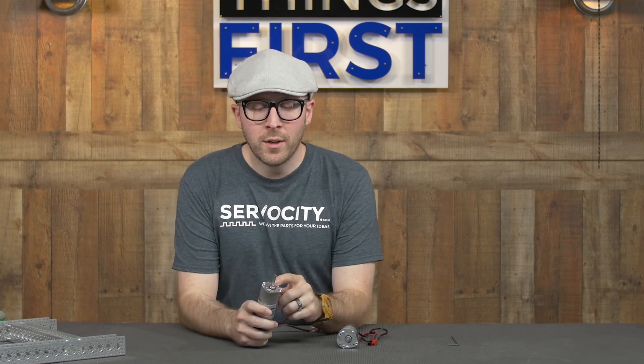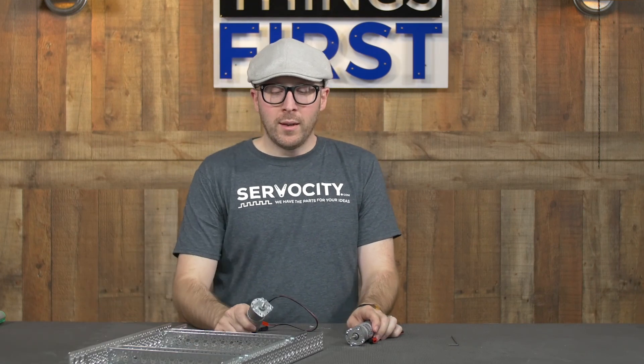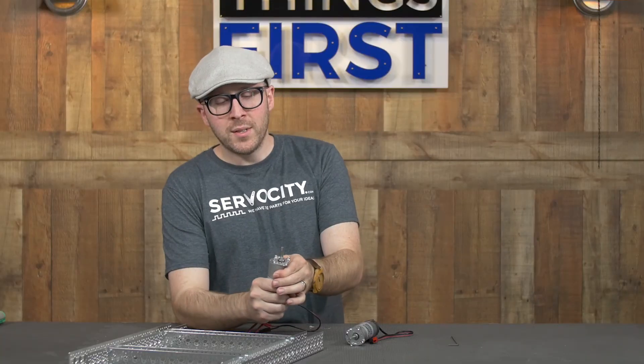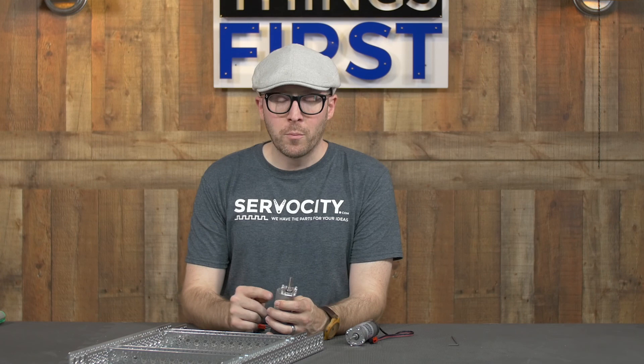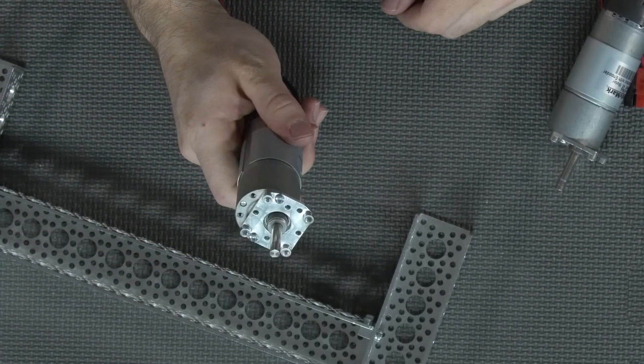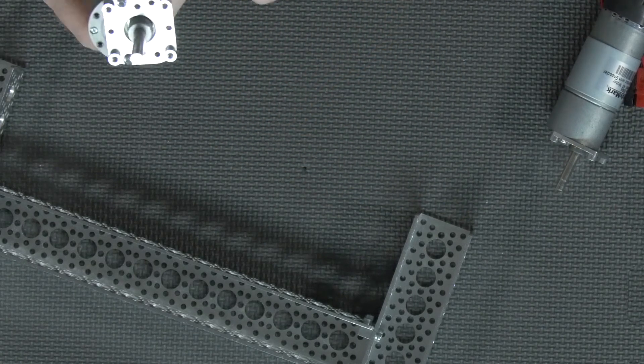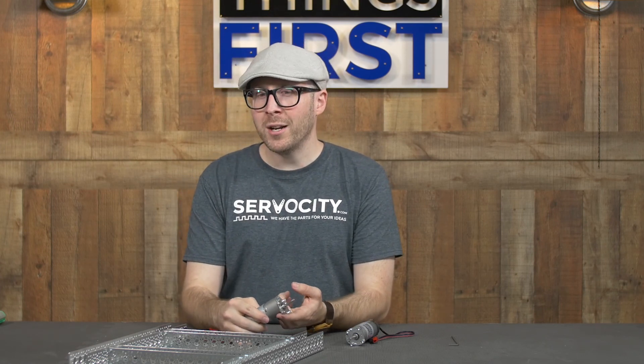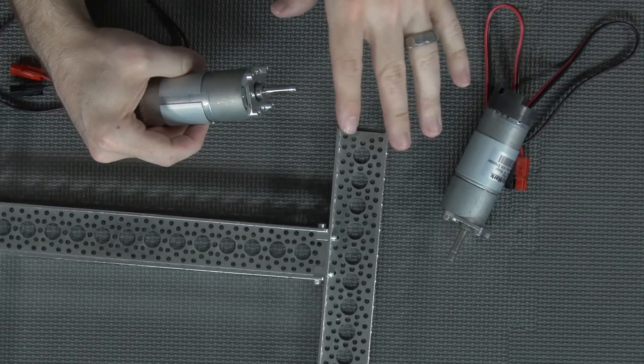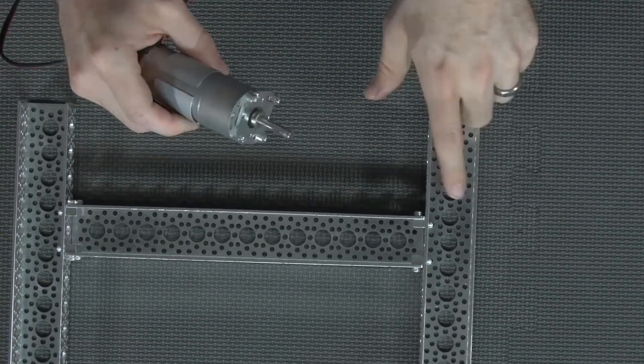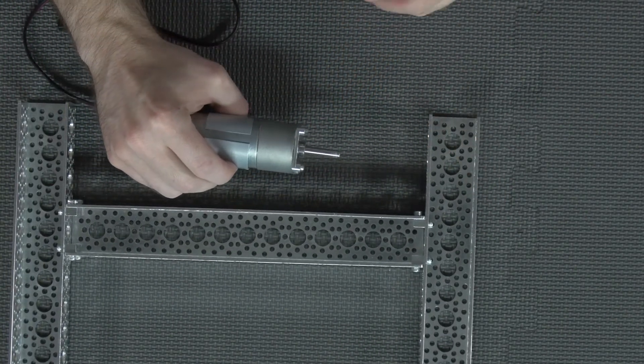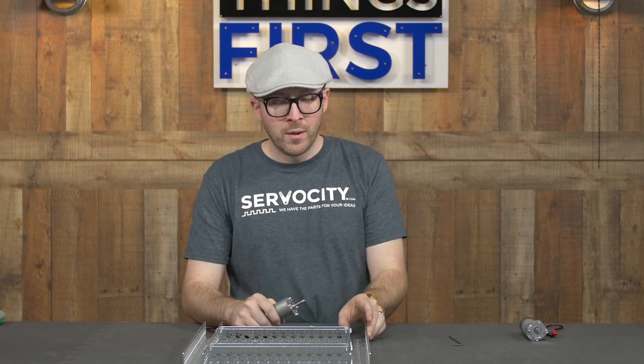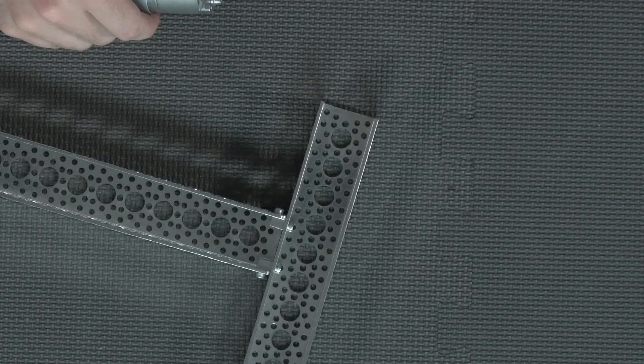Now that we have the motor mounts on our motors, we're going to mount them to our robot frame. As you can see, these motors are offset so the shaft is not in line with the center of the body because these are spur gear motors. I'm going to choose to have that extra motor body hang towards the bottom of my robot so that I have more room on the top to mount electronics. I'm going to mount it two half inch holes from the end of the channel here.